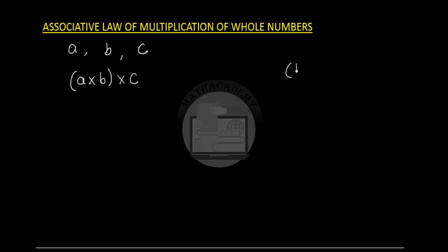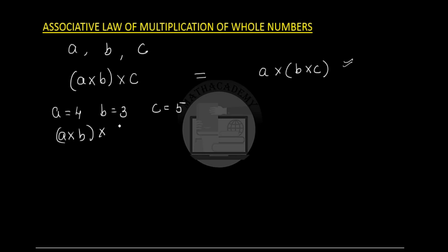or if you find the product of b and c first and then multiply that product by a, both yield the same result. This is the associative law of multiplication. For example, let a be 4, b be 3, and c be 5. For (a × b) × c: first compute 4 × 3 = 12, then 12 × 5 = 60.